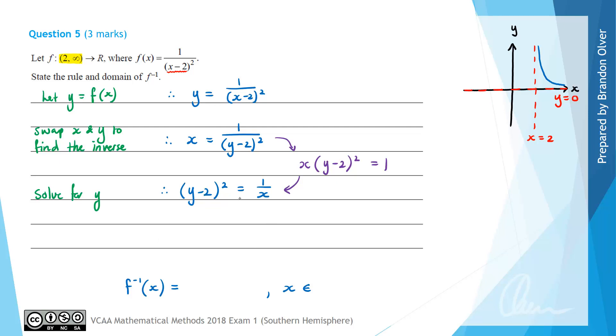Next up the opposite of squaring would be the square root so that's the inverse operation that will give (y - 2) is equal to plus or minus the square root of 1 divided by x. Now we're at the stage where we need to decide whether we need the positive half or the negative half.